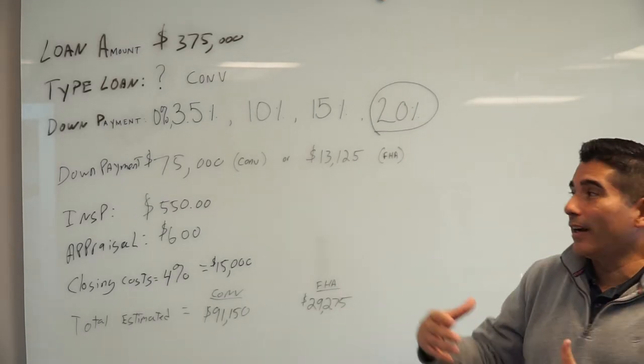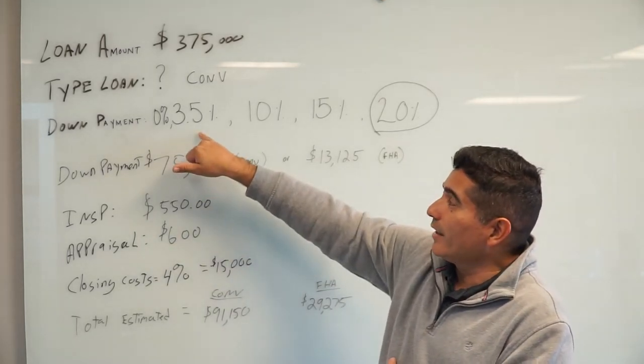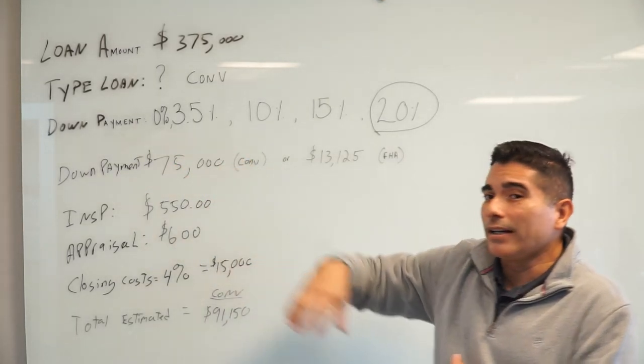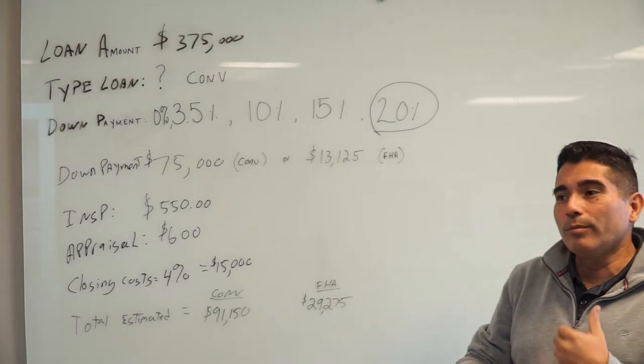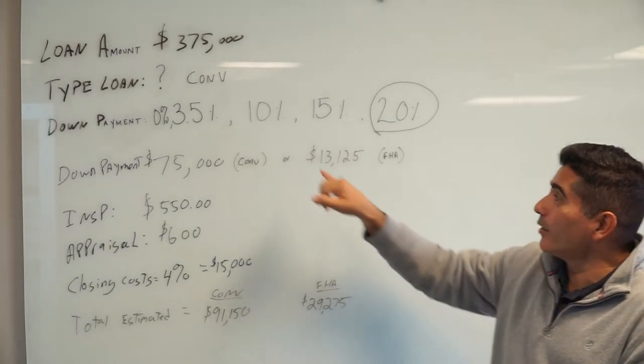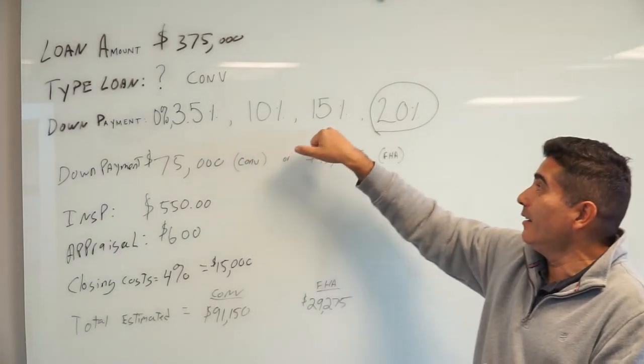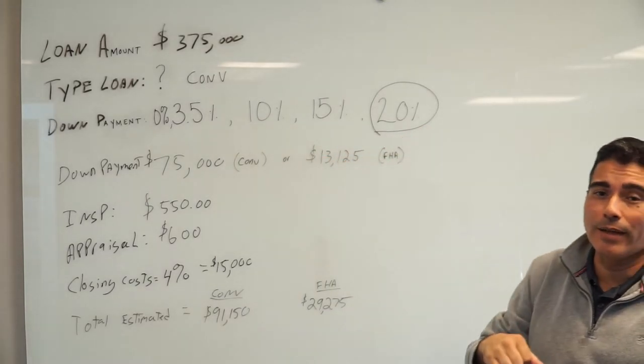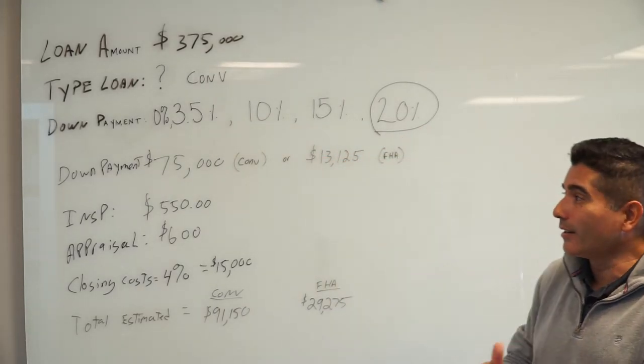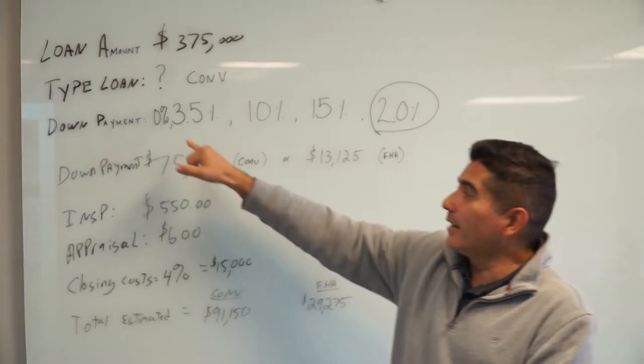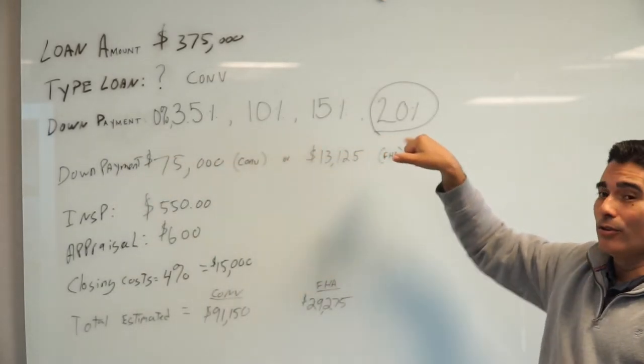If you're a first-time homebuyer, odds are you're going to get an FHA loan which is three and a half percent down. But if you've bought a home before or you're buying it for an investment, you can get offered a conventional loan which could be 10, 15, or 20 percent down payment. Bear in mind, the higher the down payment, usually the lower the mortgage that you're going to be paying because you're putting more money up front.